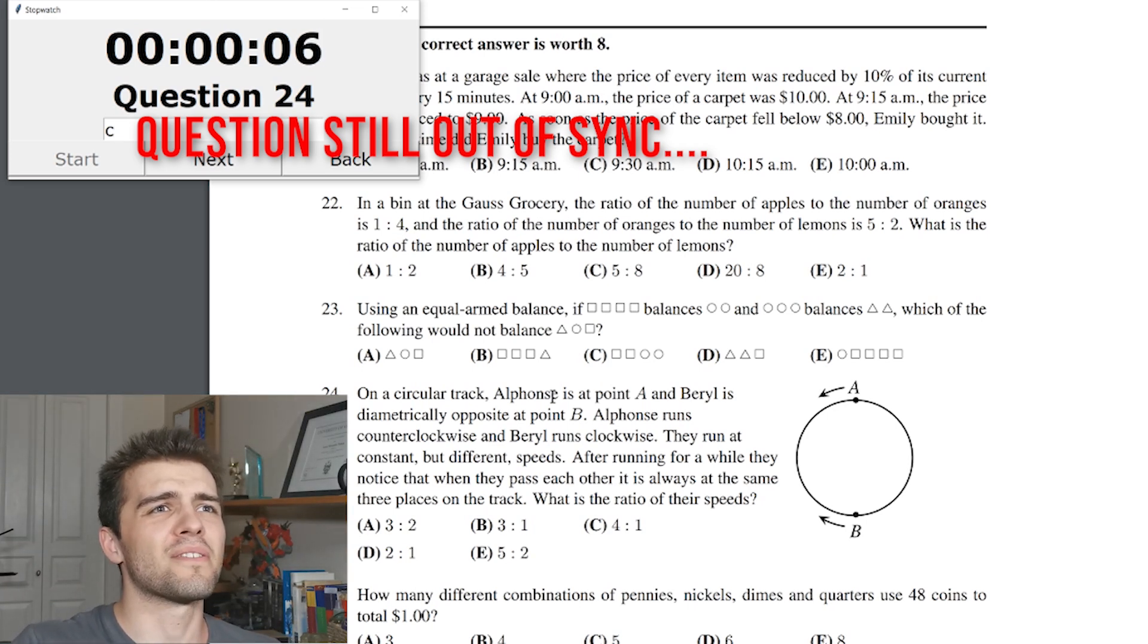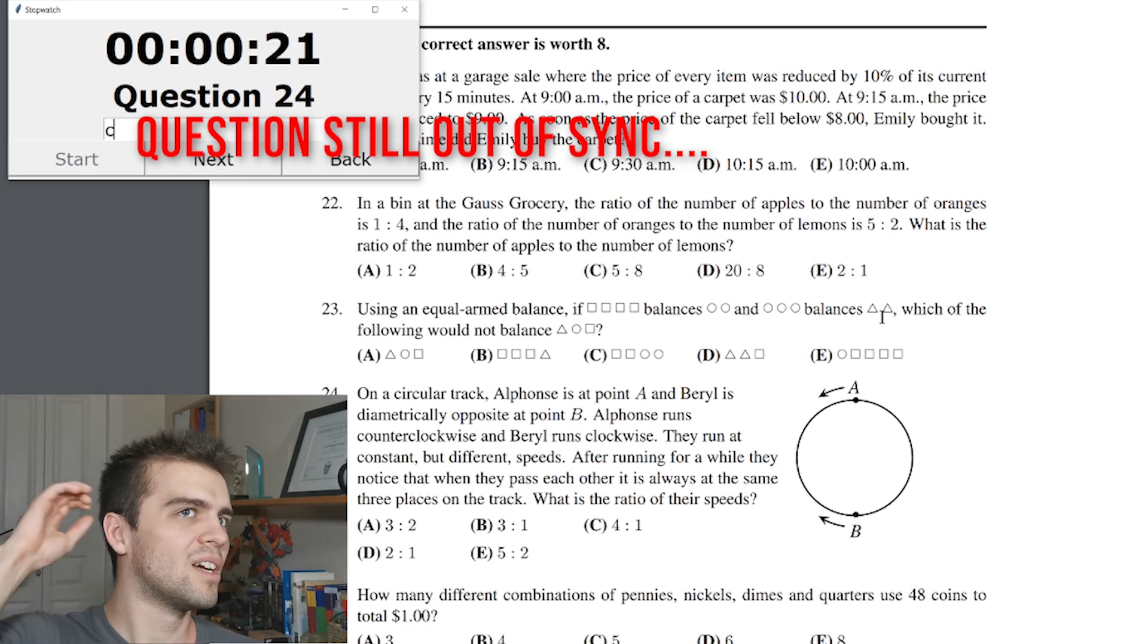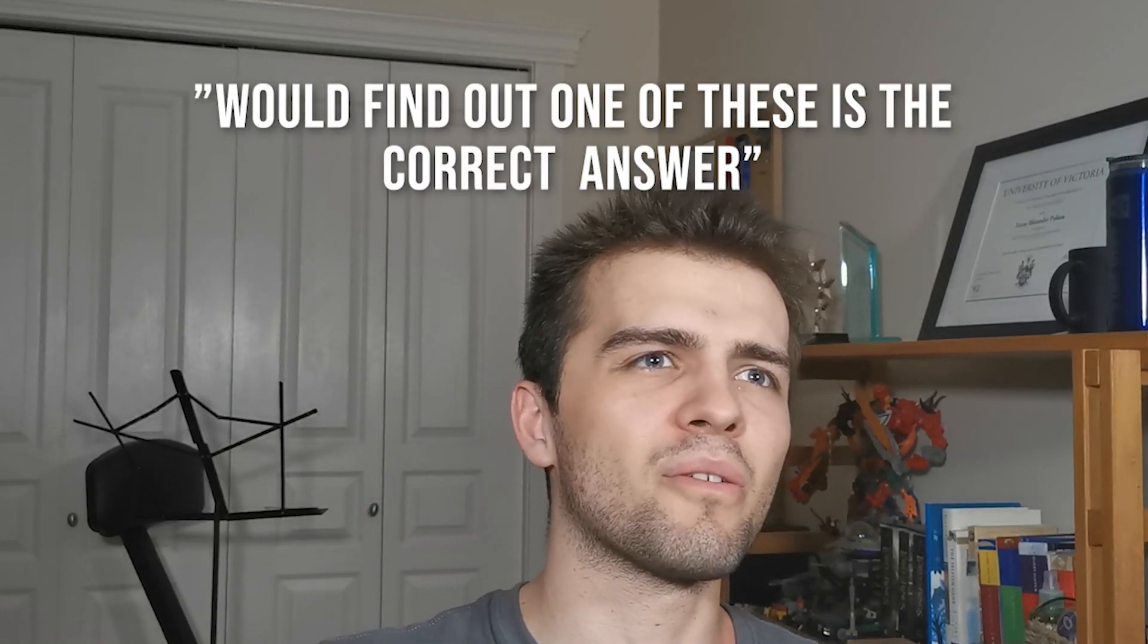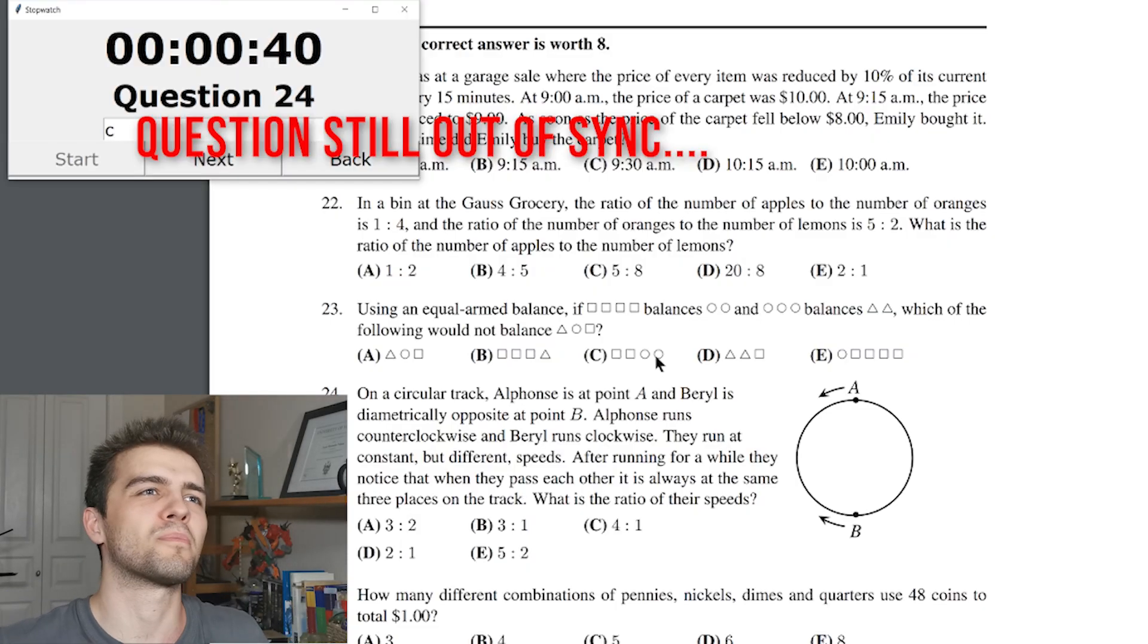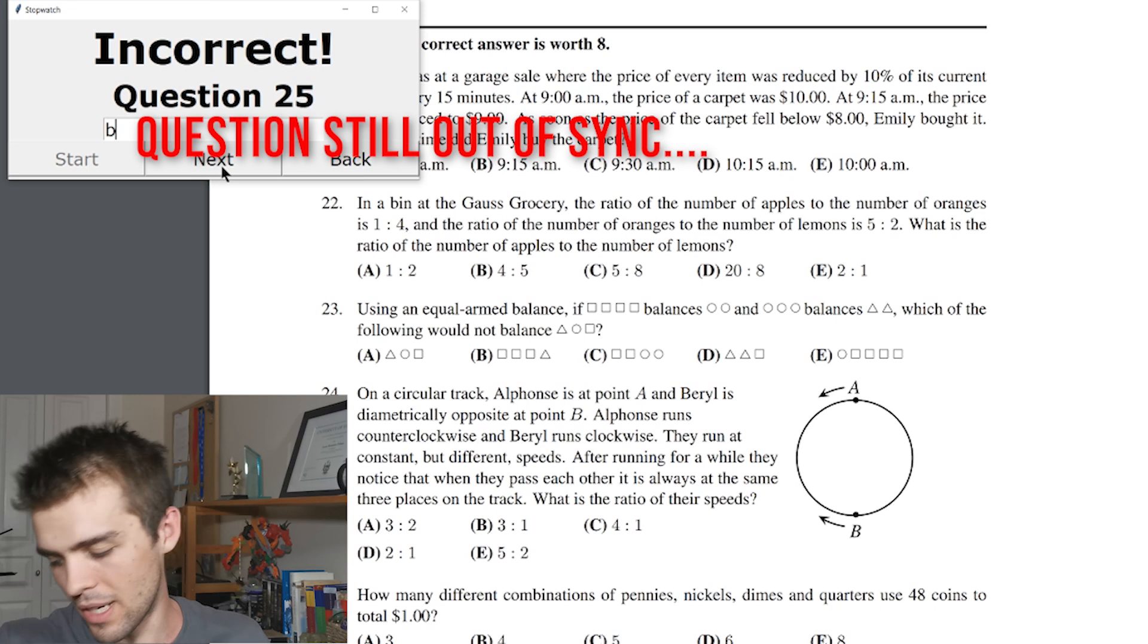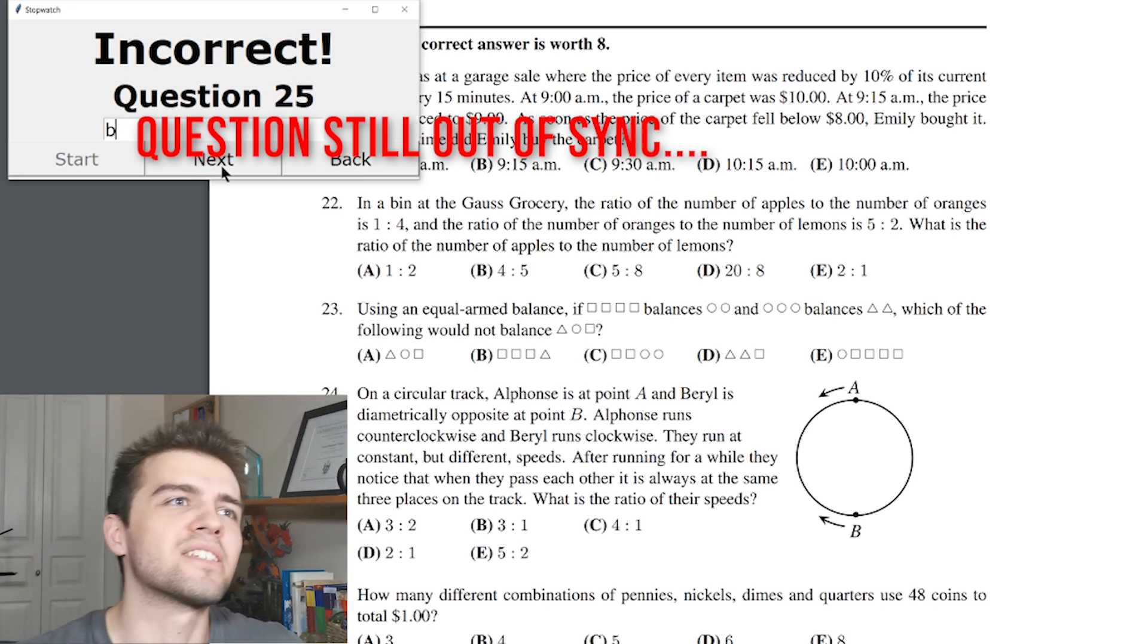Using an equal armed balance if four squares balance two circles and three circles balance two triangles, which of the following would not balance triangle circle square? This is so hard without a pencil. This is just me suffering here. Four squares balance two circles. Three circles balance two triangles. So this is just algebra. This is 4x equals 2y, 3y equals 2z. And then this is x plus y plus z what does not balance x plus y plus z and you'd write down the algebra and you would find out one of these is the correct answer. I can't write stuff down. I do not have the mental power to do that in my head. I'm going to just go on a limb and I'm going to guess B. Nope, well. Here goes another ice cube. I'm getting a little cold.